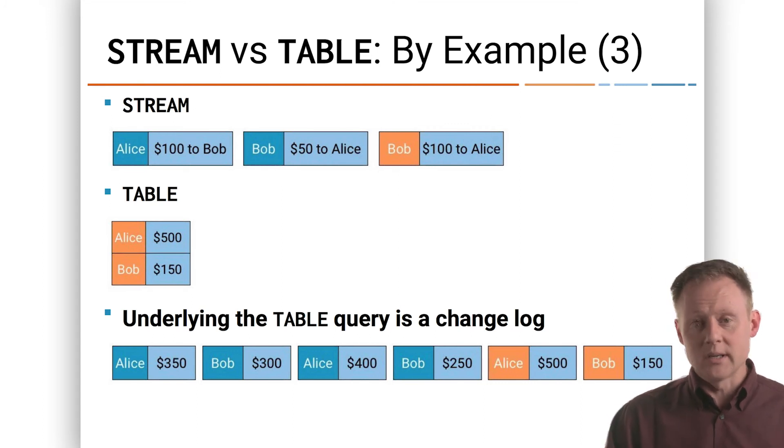We convert it into a table so we have a readily available, fast to access version of the current state of affairs in the world. And we can also convert the changes in that table back into a change log. So you should see that stream to table to stream is a transformation we can always make. We can always take a stream and turn it into a table, and a table and turn it back into a stream.